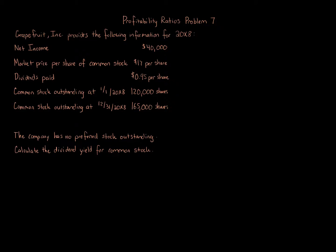Profitability Ratios Problem 7 - Grapefruit Inc. provides the following information for 20x8: Net Income $40,000, Market Price Per Share of Common Stock $17, Dividends Paid $0.95 Per Share, Common Stock Outstanding at January 1st 20x8: 120,000 Shares, Common Stock Outstanding at December 31st 20x8: 165,000 Shares. The company has no preferred stock outstanding. Calculate the Dividend Yield for Common Stock.